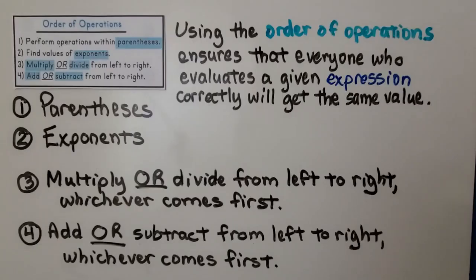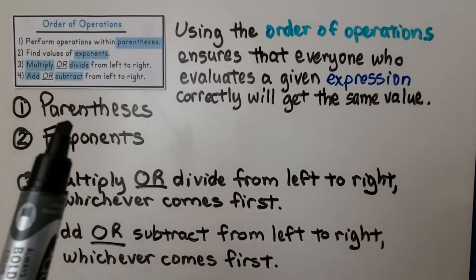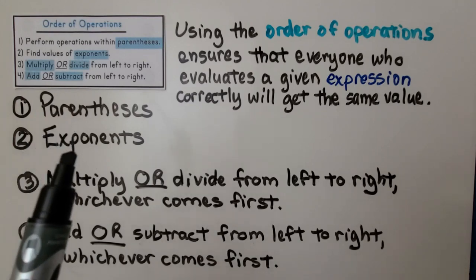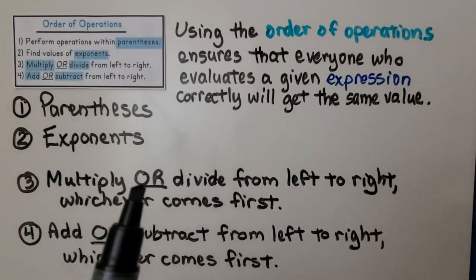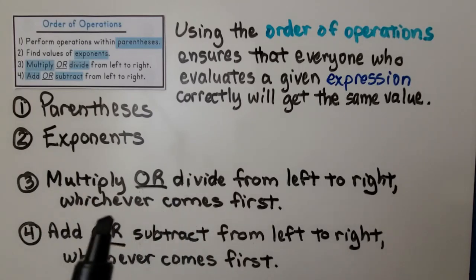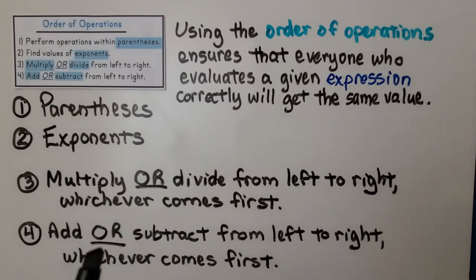Here's a quick review. Using the order of operations ensures that everyone who evaluates a given expression correctly will get the same value. We do inside parentheses first, then any exponents, then we multiply or divide from left to right, whichever comes first. Then we add or subtract from left to right, whichever comes first.